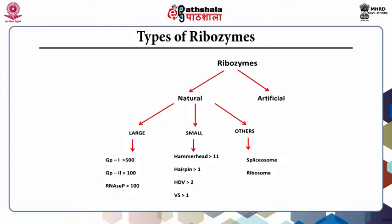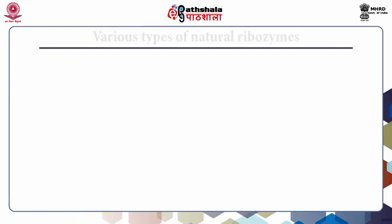Artificial ribozymes are synthesized in the laboratory based on the dual nature of RNAs as catalysts and as informational polymers. The natural ribozymes can be categorized into various types.